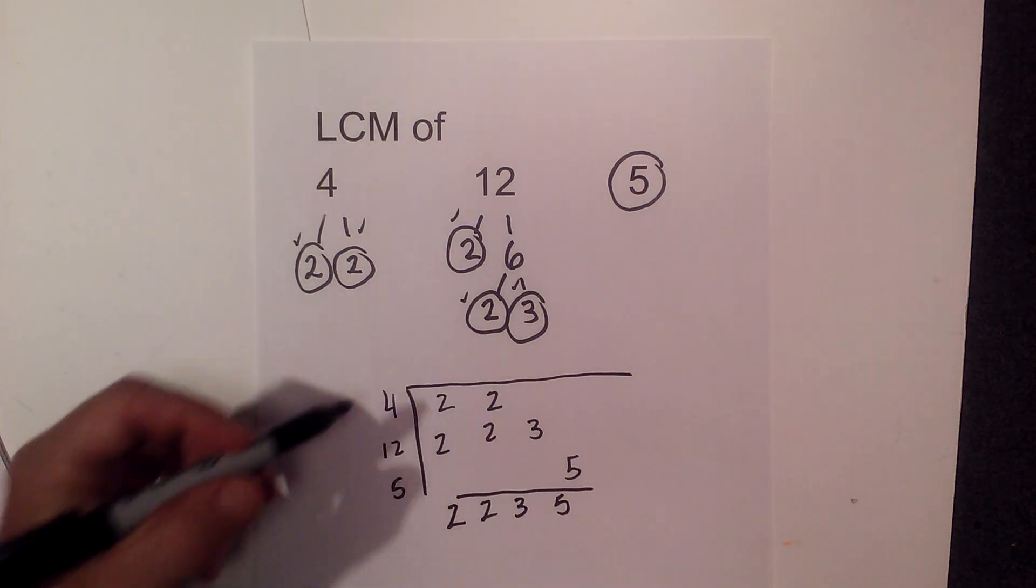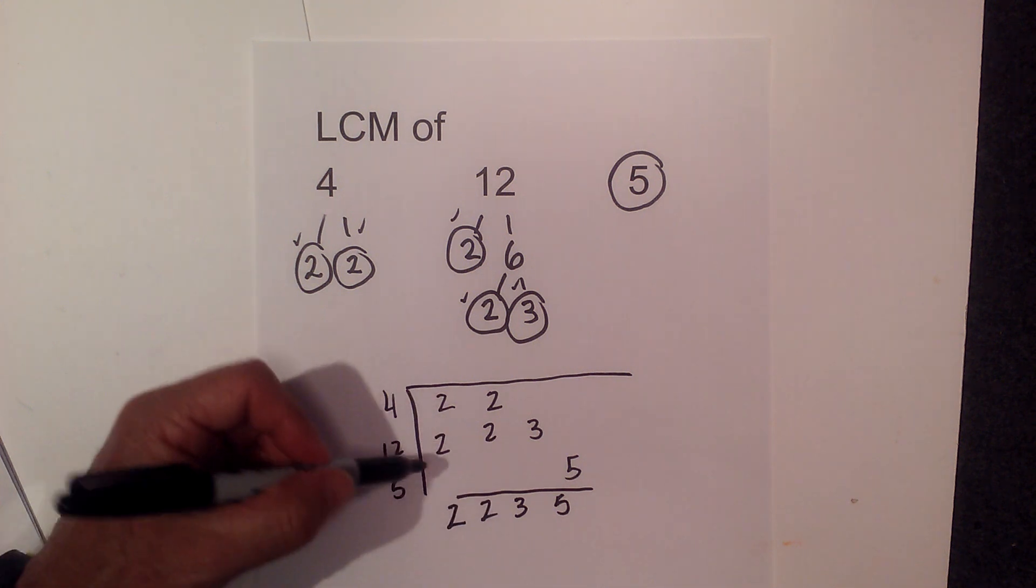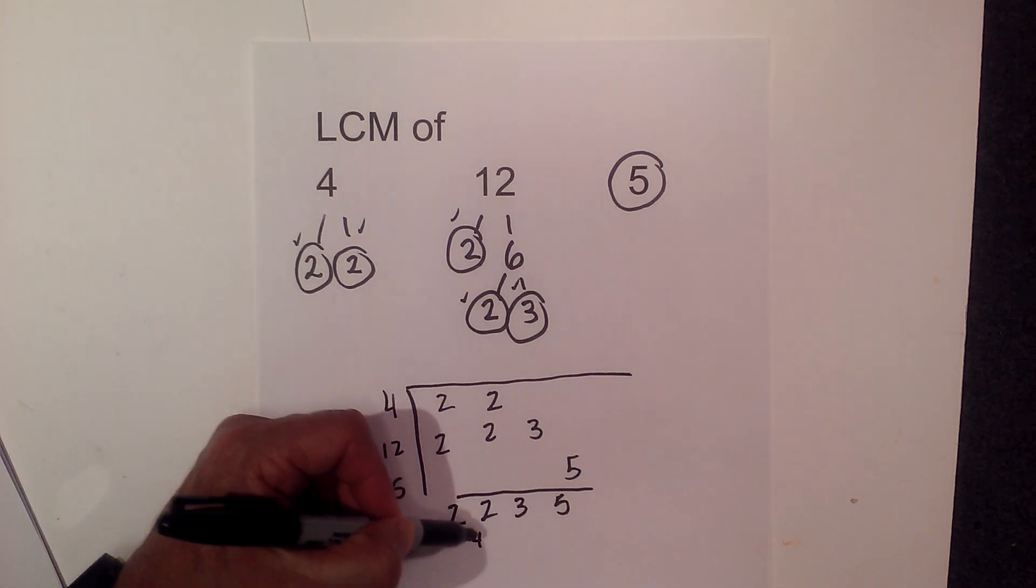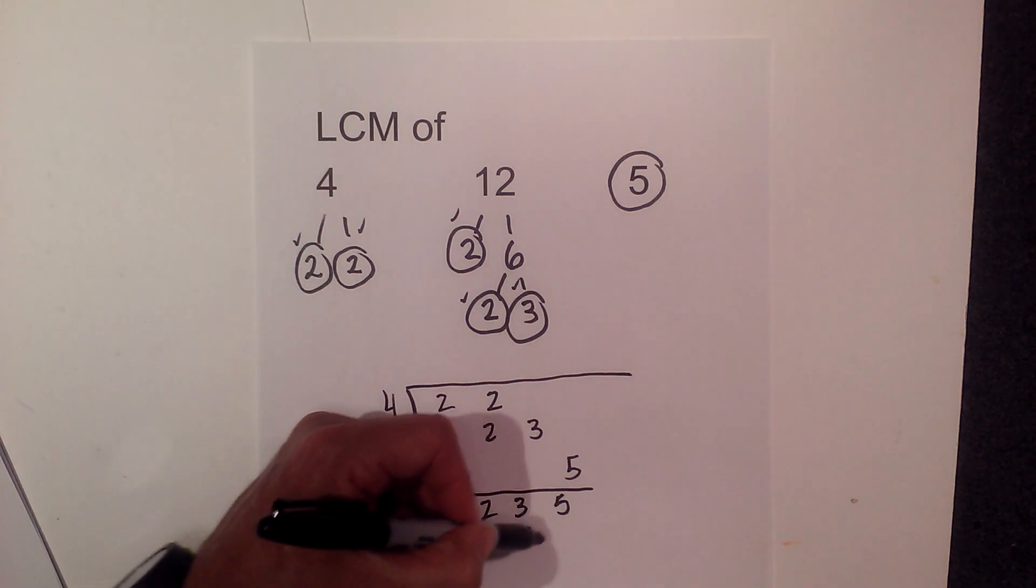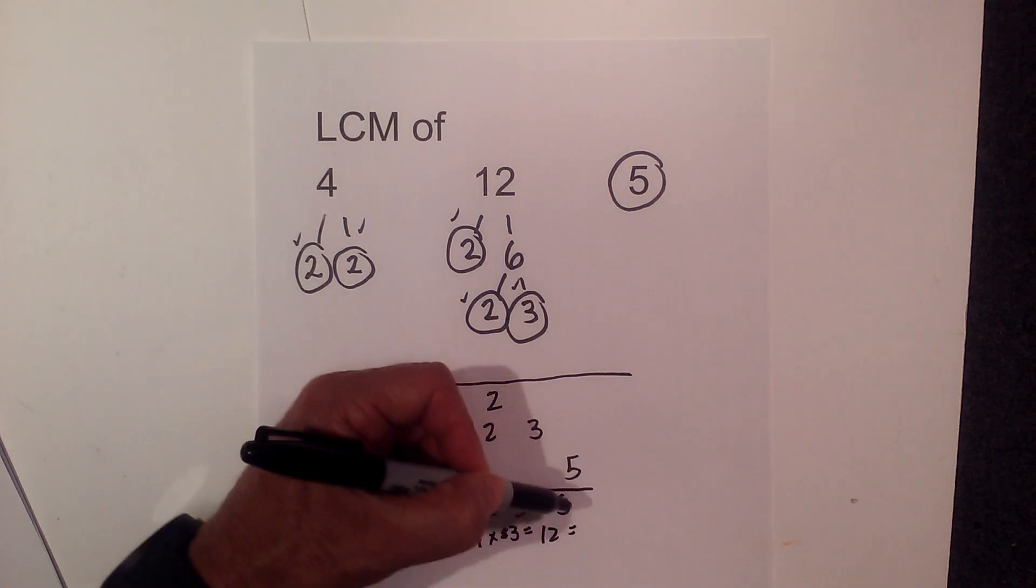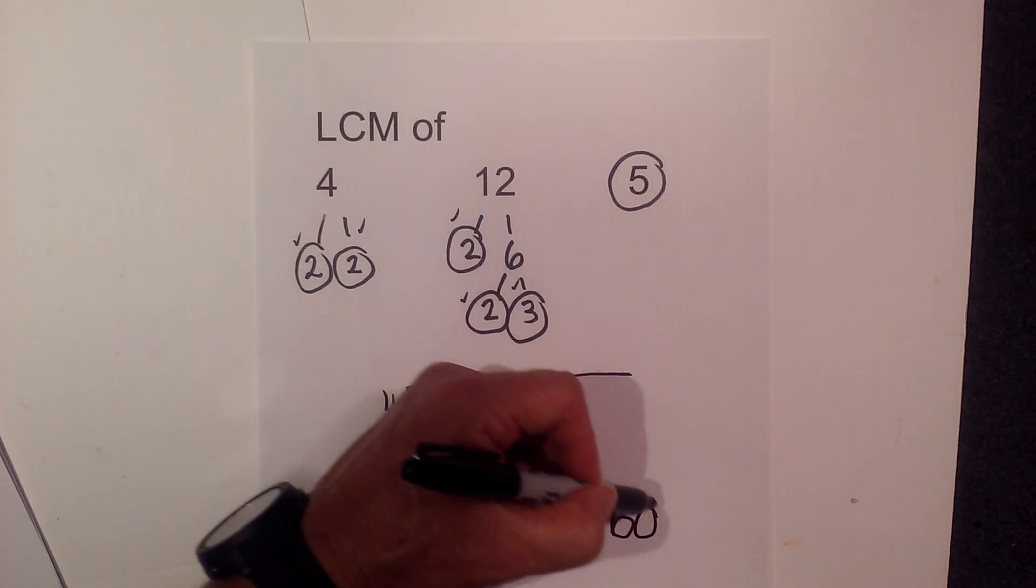Okay so next what we do is we just multiply these out. 2 times 2 is 4 times 3 is 12 and then 12 times 5 is 60.